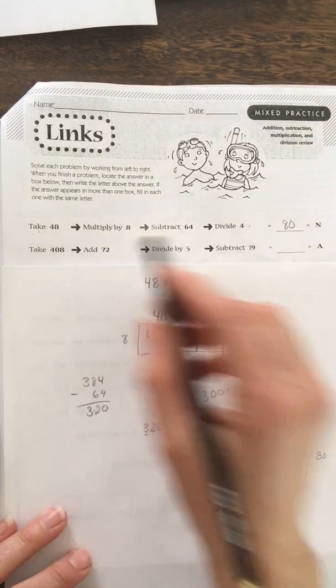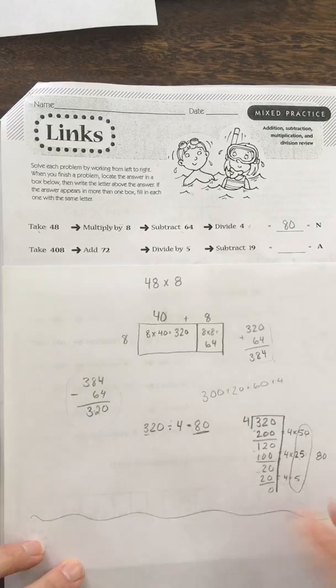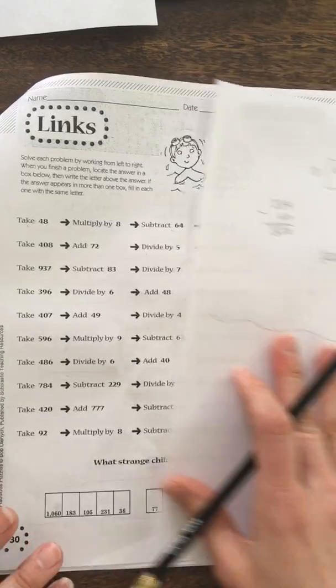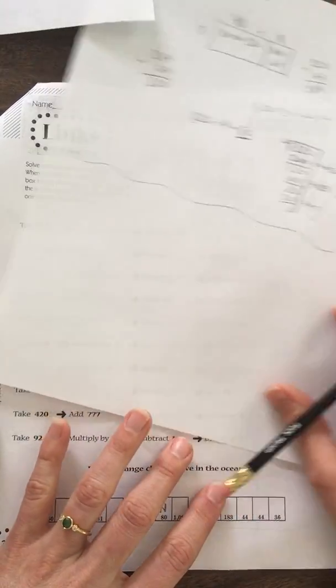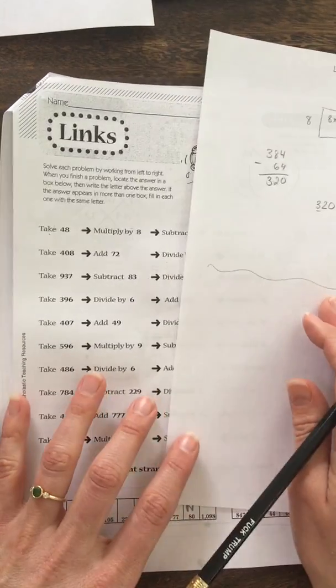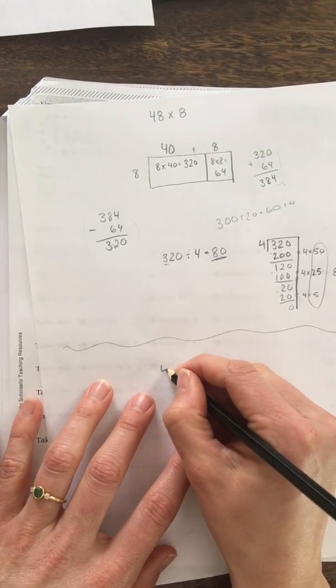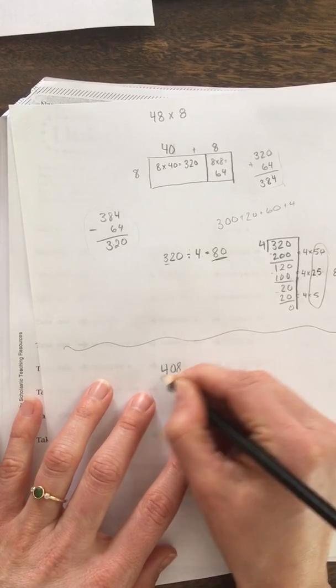So this one says take 408. So again, I'm going to start on a new spot. Give yourself enough space. Hopefully you have enough paper. If not, message me and I can help you. So we'll do 408 and then we have to add 72. So 408 plus 72.